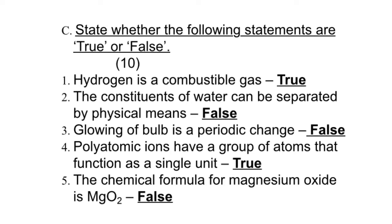Now we come to part C: state whether the following statements are true or false. First, hydrogen is a combustible gas - we all know that it burns with a pop sound, so it is true. The constituents of water can be separated by physical means - no, we cannot separate it by physical means, so it is false. Glowing of a bulb is a periodic change - no, it is false. We can light the bulb whenever we want.